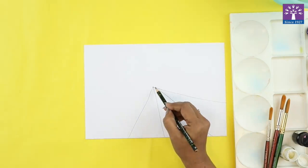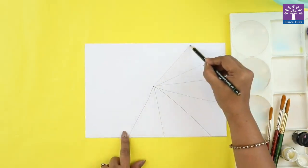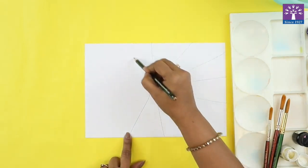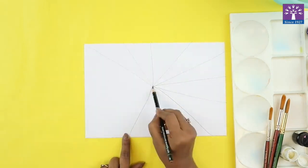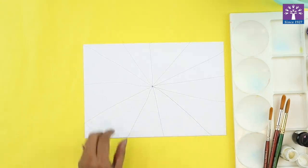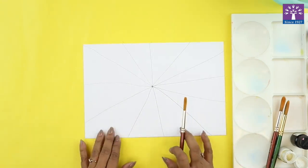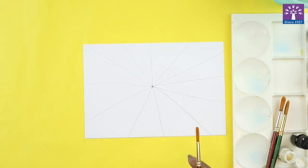So these lines can be, the parts formed can be thick and thin. Now we are going to paint each part of this painting with different colors. You can use colors of your choice.